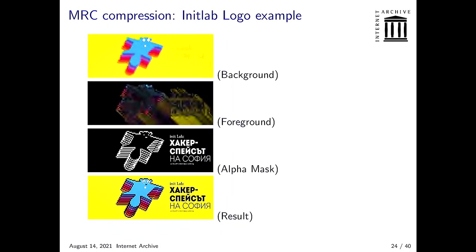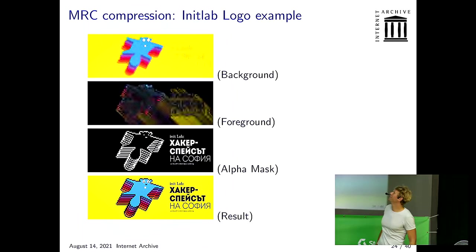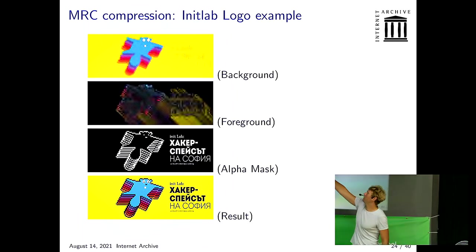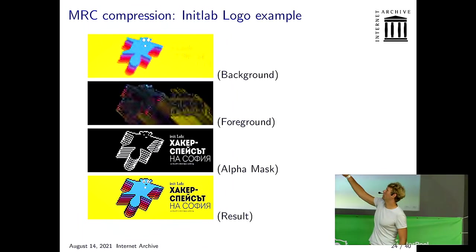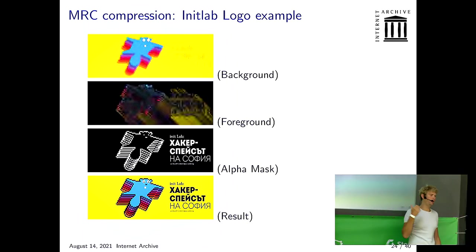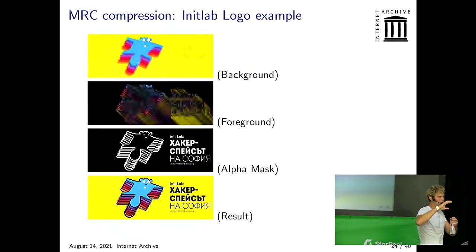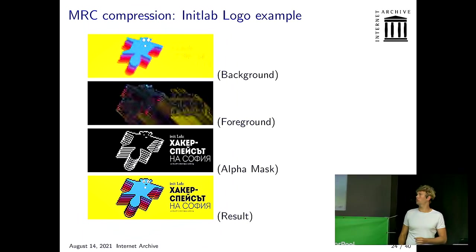Here's another example — a full page with the init.lab logo. This is the result. The background is kind of a vampire-looking cute animal. The foreground is barely recognizable, and the mask is exactly what you'd expect: sharp lines and the things that really matter, except now we have it in full color.